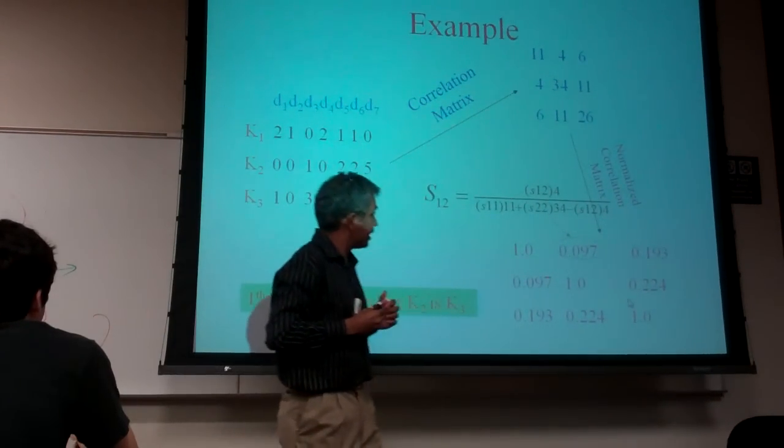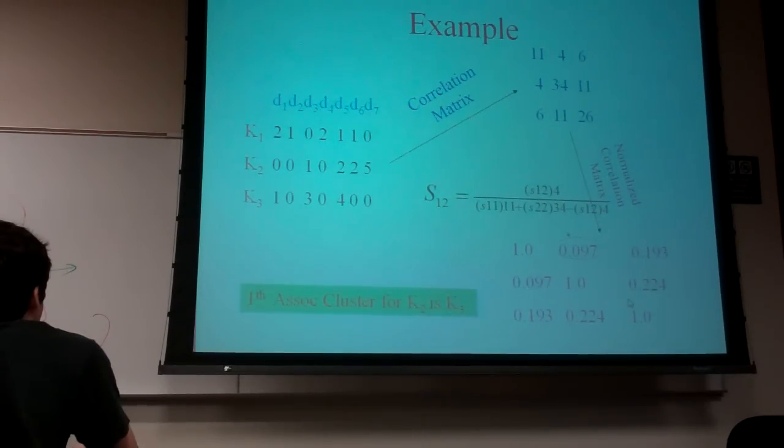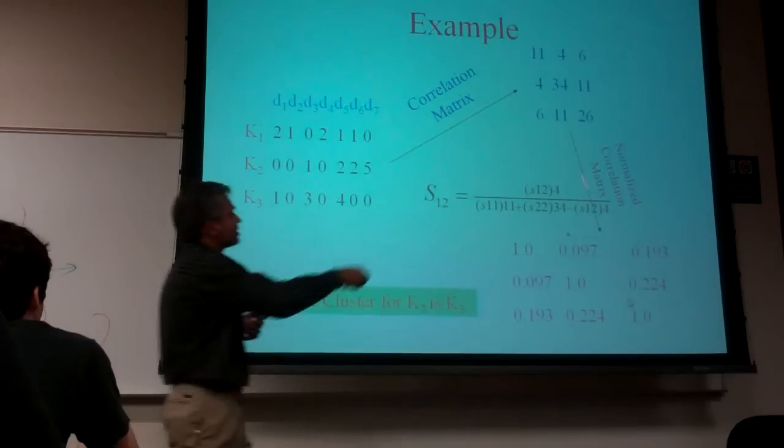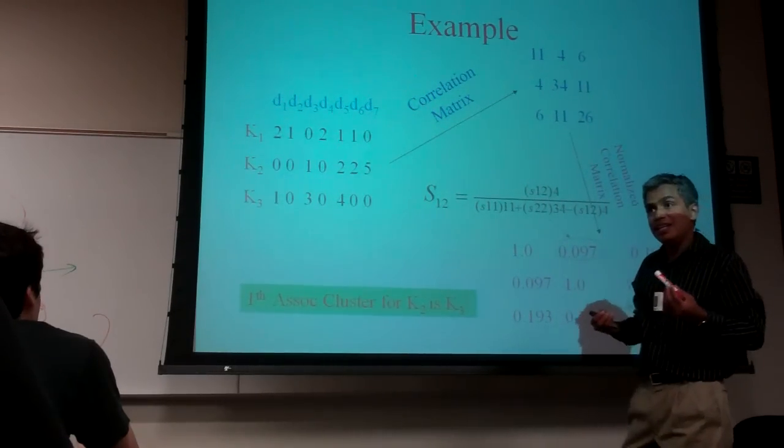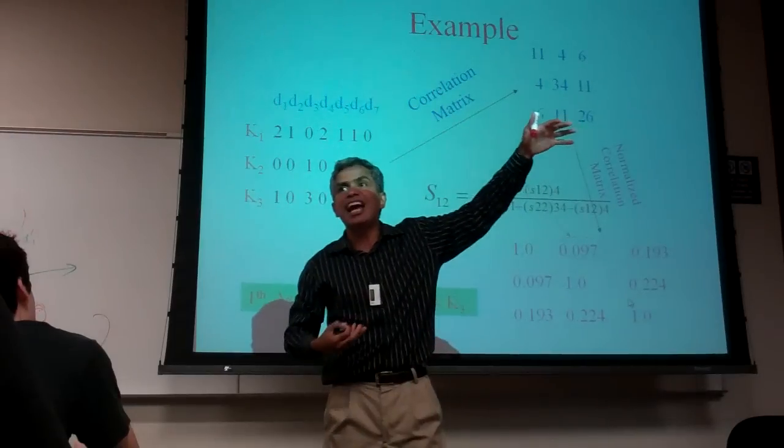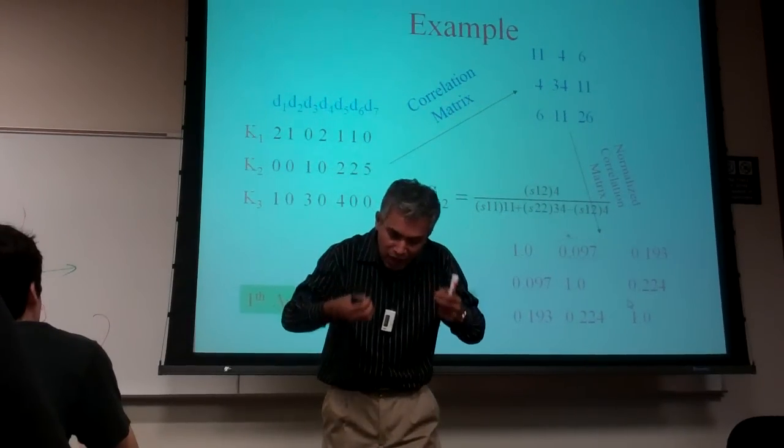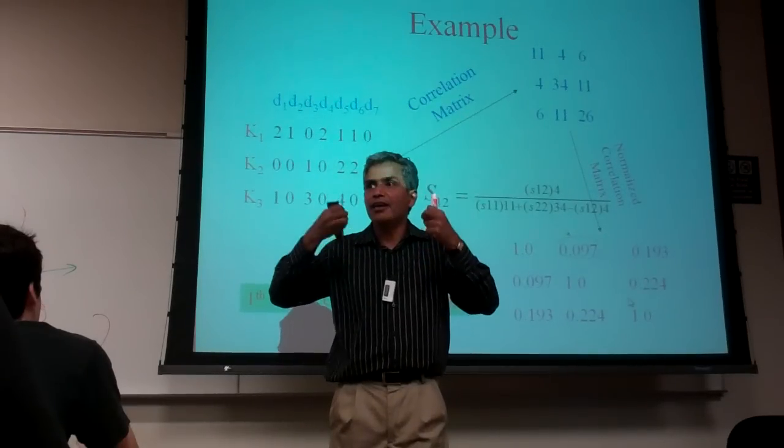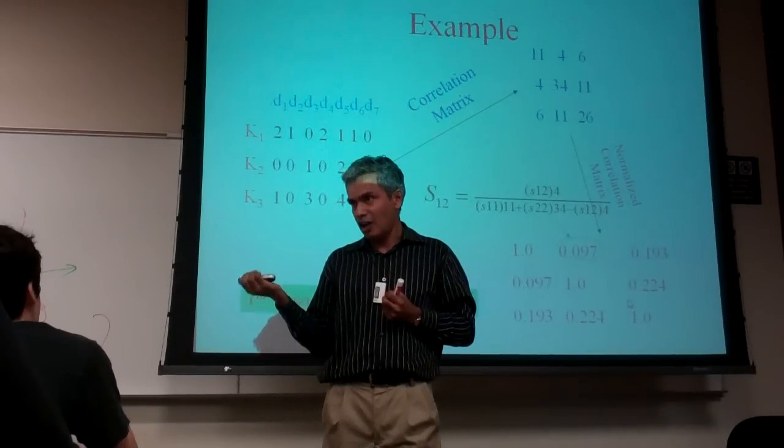The only other question is, can I normalize it? Can I normalize it such that basically the size of these diagonal elements really would depend upon how many times the words are present in the corpus. Whether or not two words are correlated doesn't depend on how often each of them is present in the corpus.